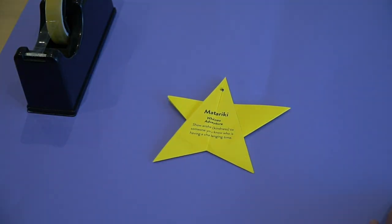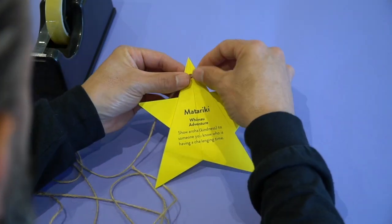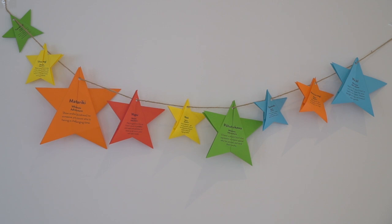For example, Tupuānuku is one of the stars connected to all things that grow in our garden and will determine how well it will grow in the upcoming season.